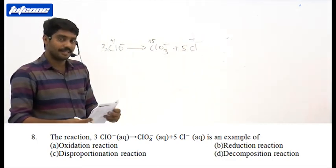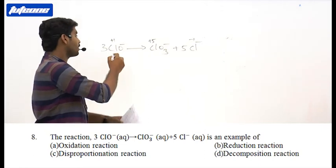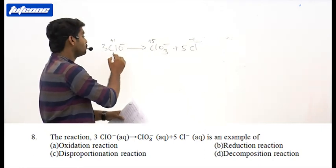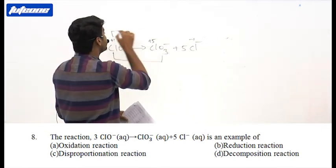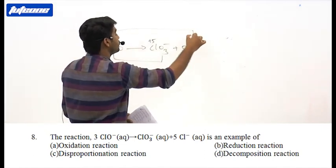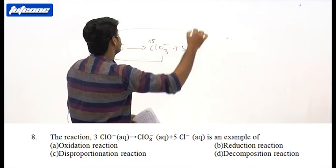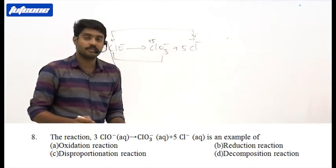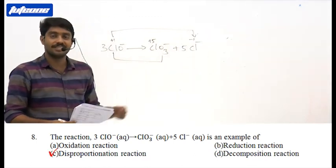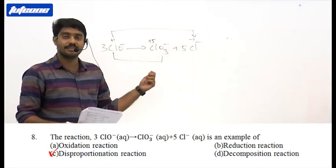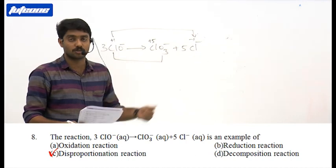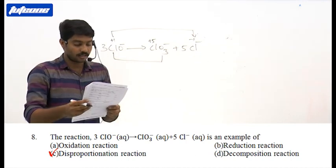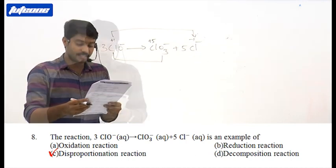In this reaction, the element chlorine undergoes both oxidation and reduction. So this reaction is a disproportionation redox reaction. The answer is option C.